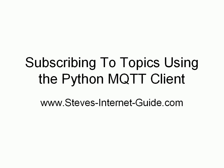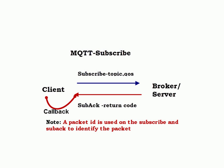In this video we're going to look at subscribing to topics using the Python MQTT client. This is the subscribe process: the client subscribes to the topic by supplying a topic name and quality of service. The broker responds with a subscription acknowledge, and that acknowledgement triggers a callback on the Python client. We can use that callback to identify the topic subscription.